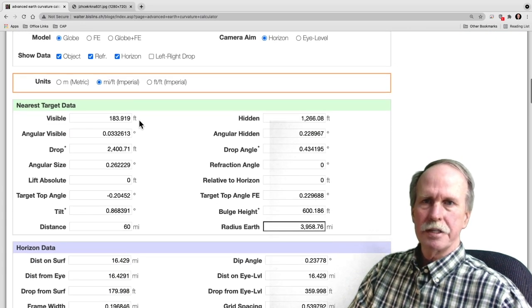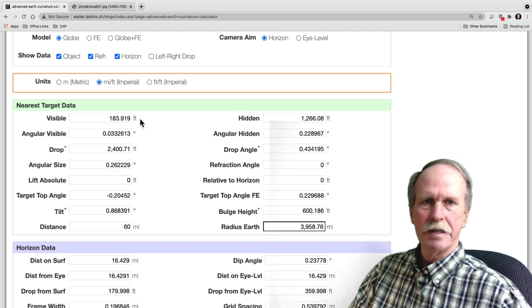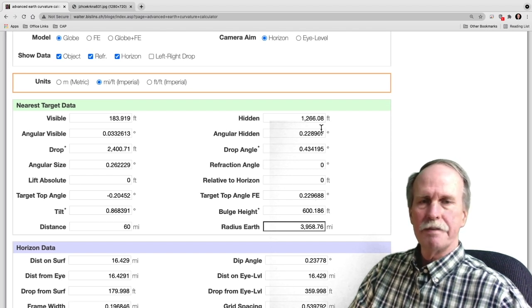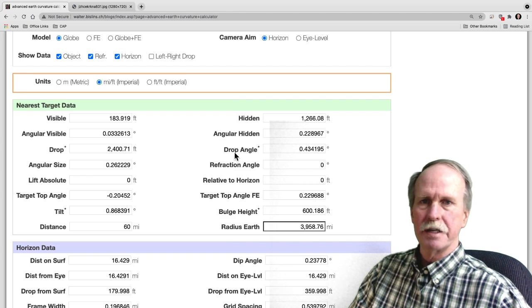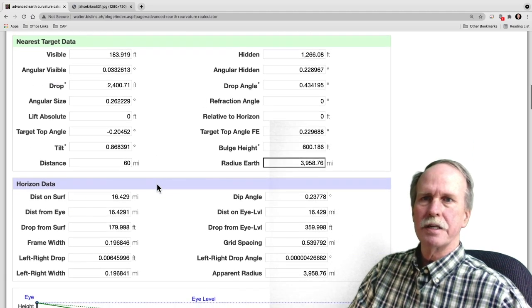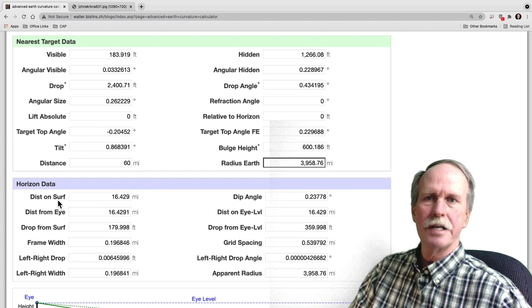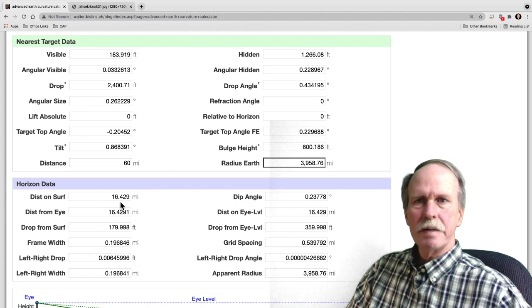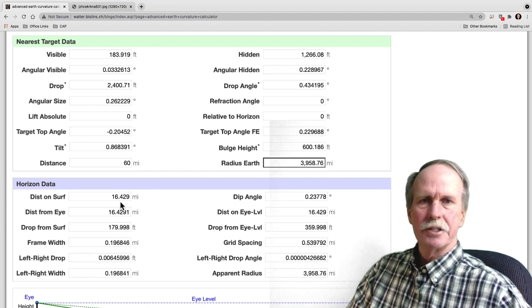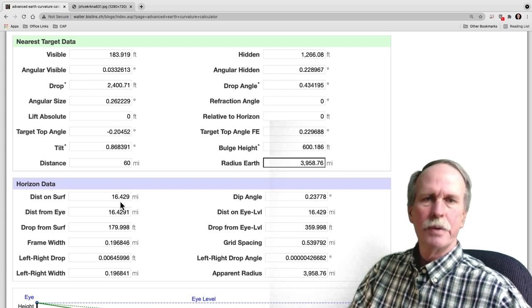But right now let's go ahead and see what we have. Now according to this we should see 183 feet at the top of the Willis Tower. That means that 1266 feet is missing. Now the other thing that's kind of interesting is the distance to the horizon on the surface is going to be about 16 and a half miles. This is what comes out of the curve calculator. Let's go see if we can do it by hand.